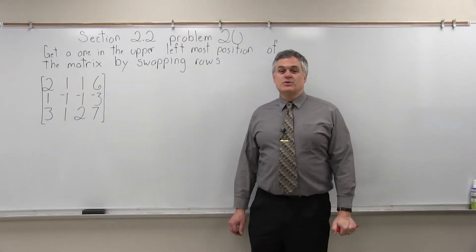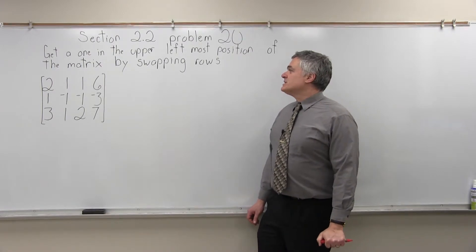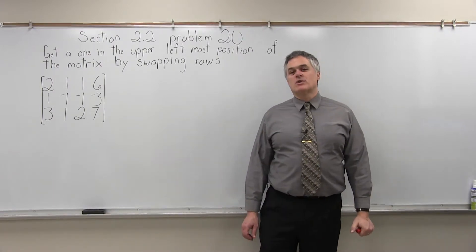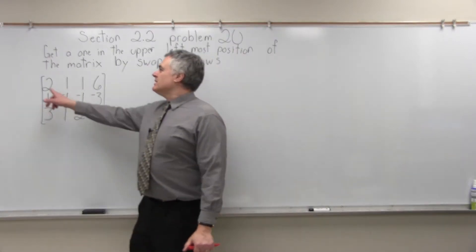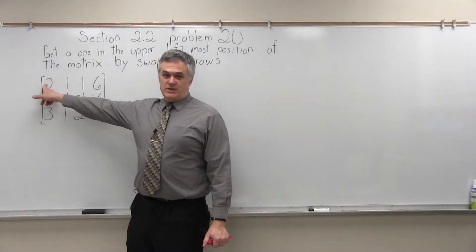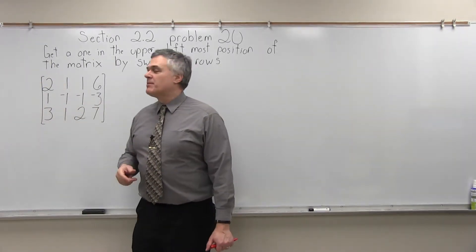This is Section 2.2, Problem 20. It says, get a 1 in the upper leftmost position of the matrix by swapping rows. So we want a 1 in the upper leftmost position. Right now it's a 2. We need to make a 1, and we need to make that happen by swapping rows.